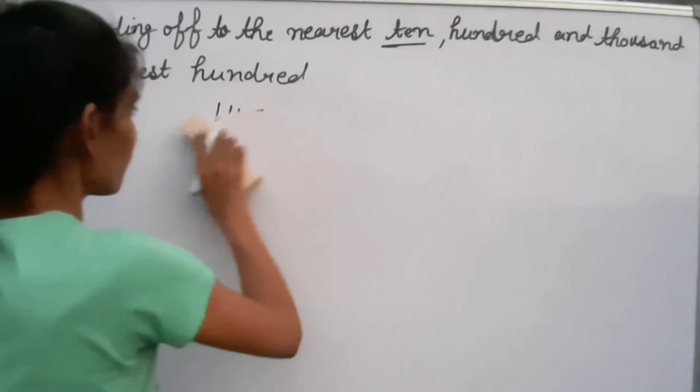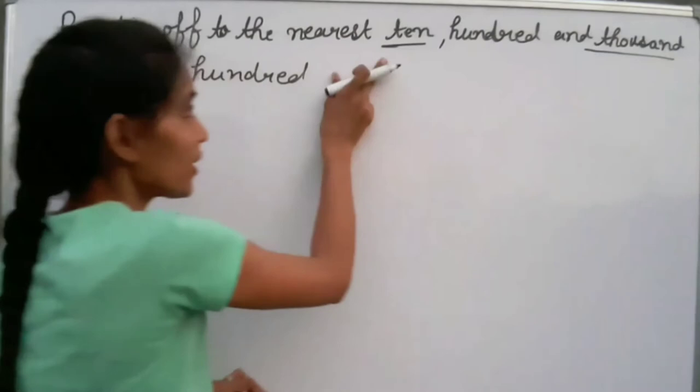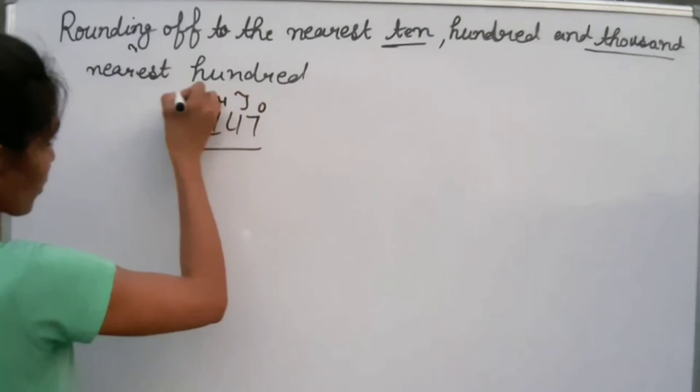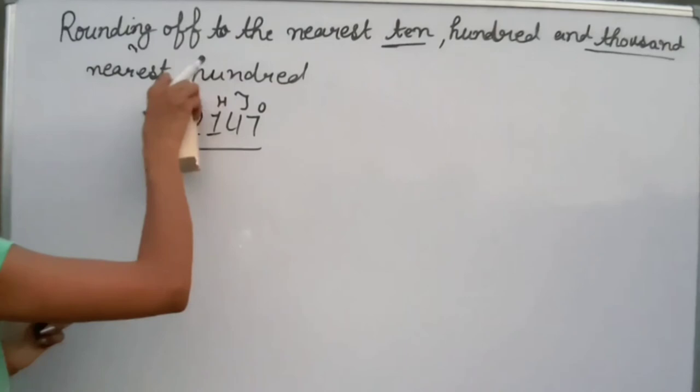Next, let's round to the nearest 1000. We will take the number 2147. This gives us: 7 in the ones place, 4 in the tens place, 1 in the hundreds place, and 2 in the thousands place. To round to the nearest 1000, we look at the hundreds place value.